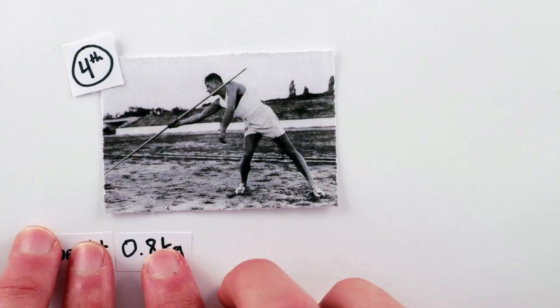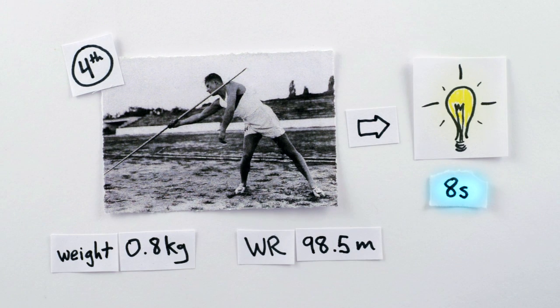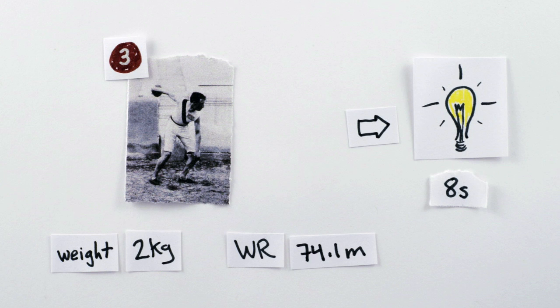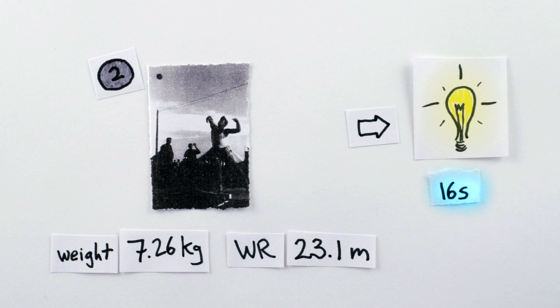So in fourth place, a javelin thrown the world record distance has enough energy to power a 50-watt lightbulb for 8 seconds. In third is the discus, powering a lightbulb for 15 seconds, and squeezing into second with one more second of illumination is the shot.